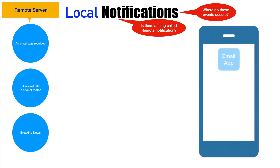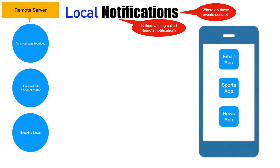Let's assume that we have applications on the mobile device — there is an email application, a sports application, and a news application. Whenever an email is received on the remote server, the email application on the device needs to be notified about it. Whenever a wicket falls in a cricket match, the remote server needs to inform the sports application. And in the same way, the news app needs to keep itself updated with the latest breaking news.